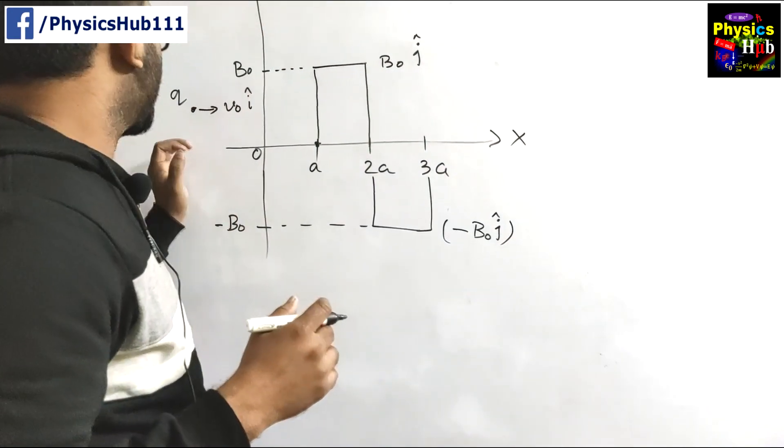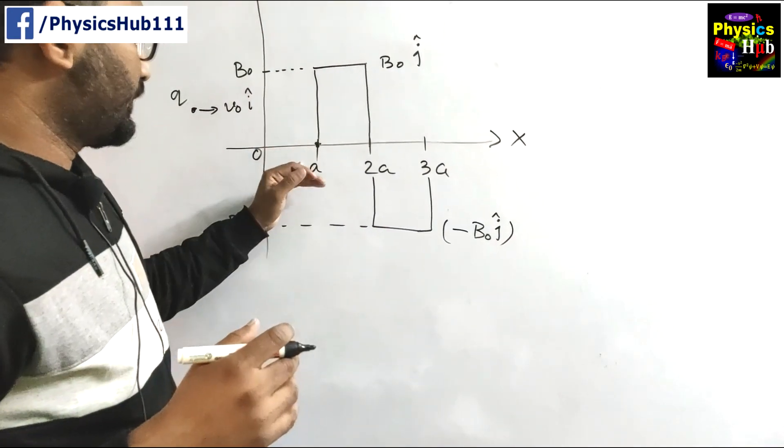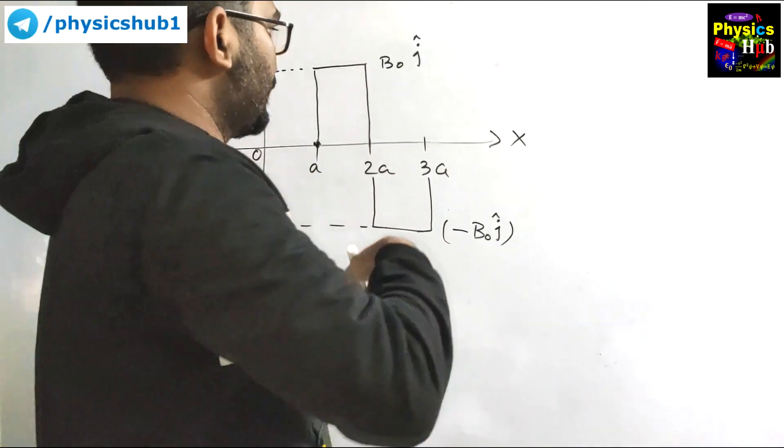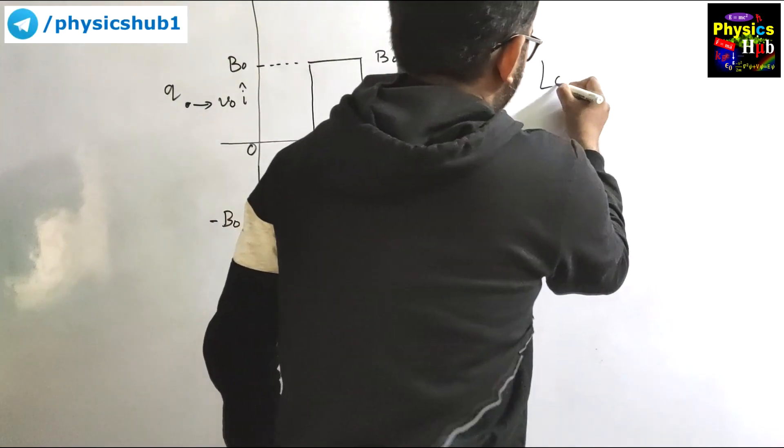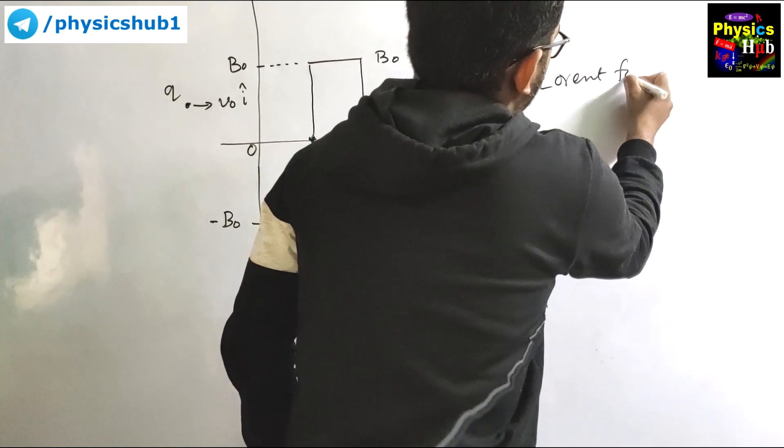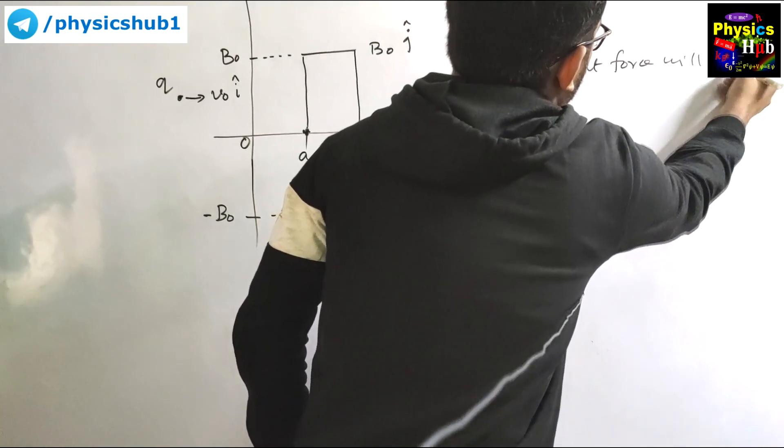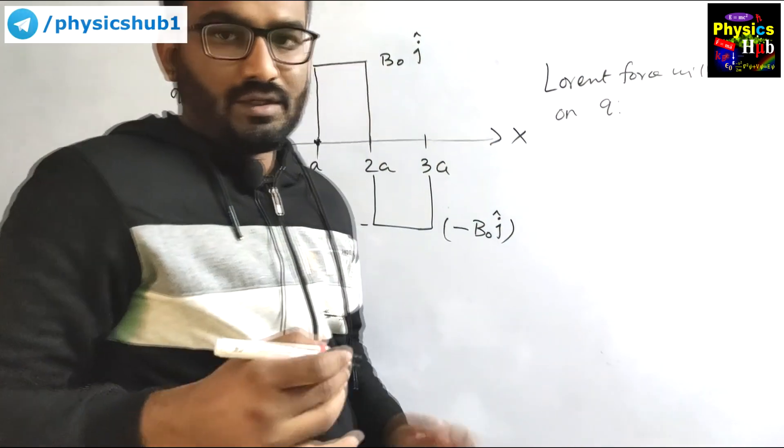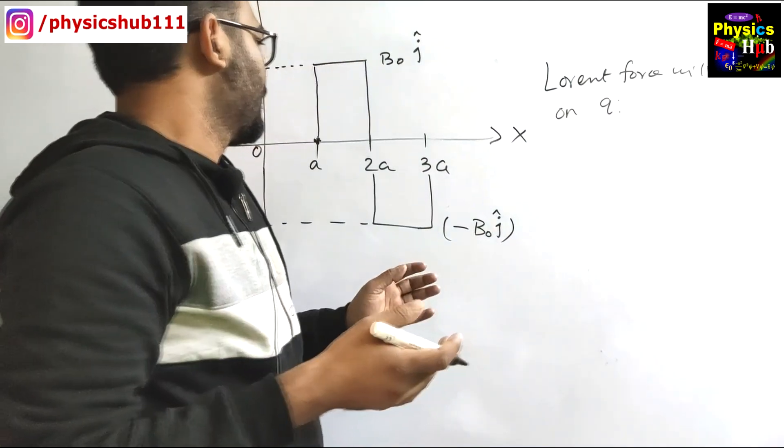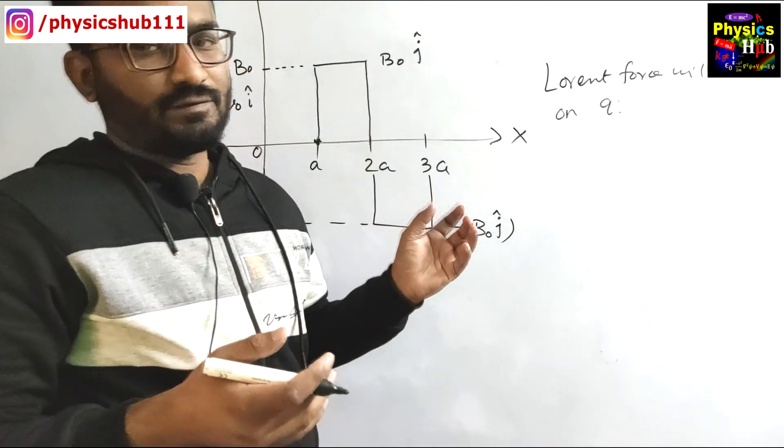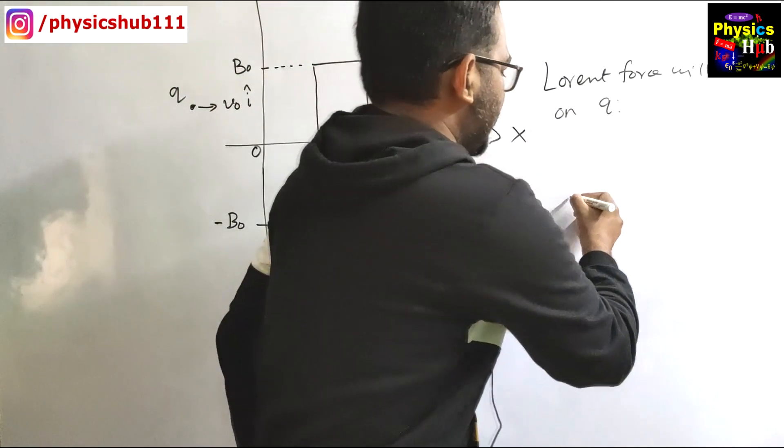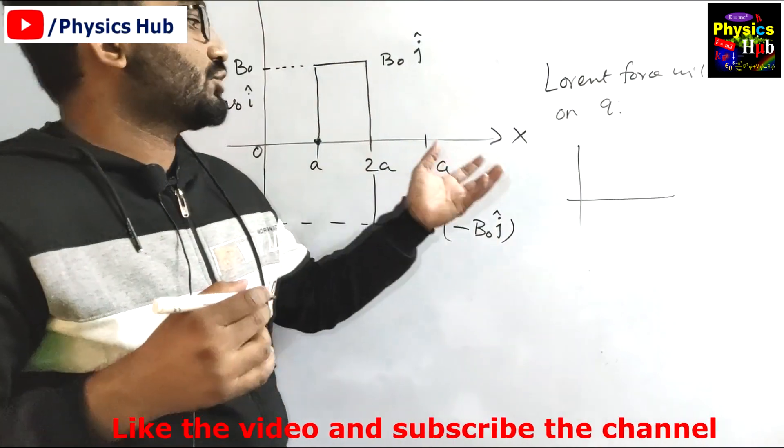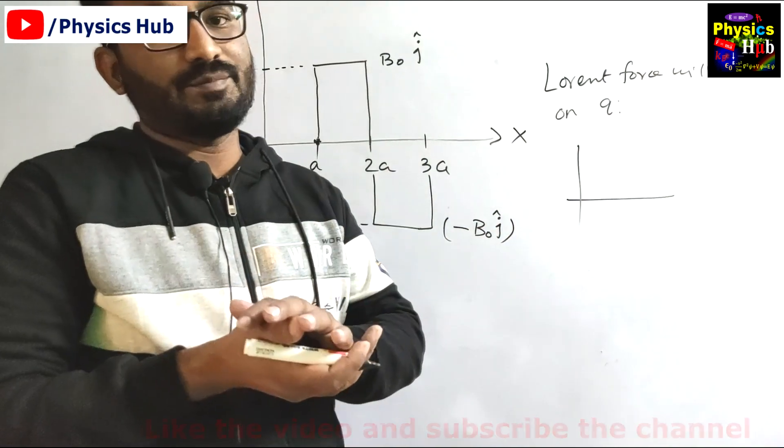How can you do this? We can consider here at this point where this charge is entering into the magnetic field. Now you know the Lorentz force expression - Lorentz force will act on this positive charge q. The formula is F equals q into v cross B. The motion of the particle will be on the x-z plane because the field is on y plane, so the motion will be on x-z plane, v cross B.